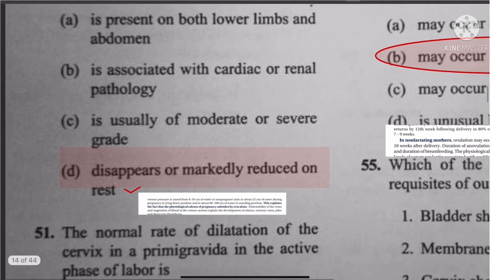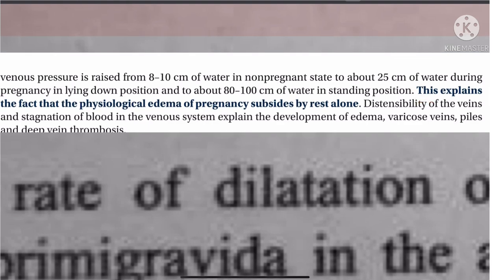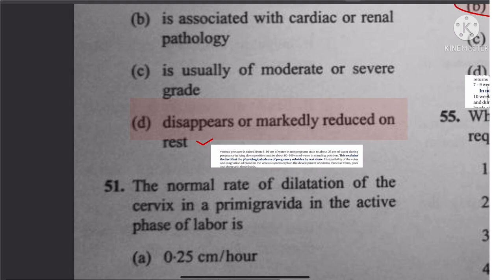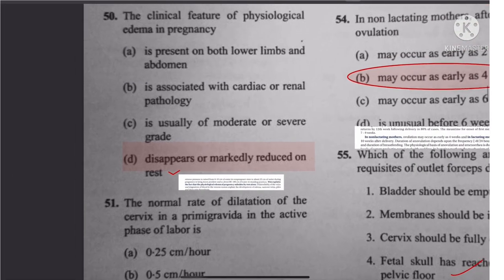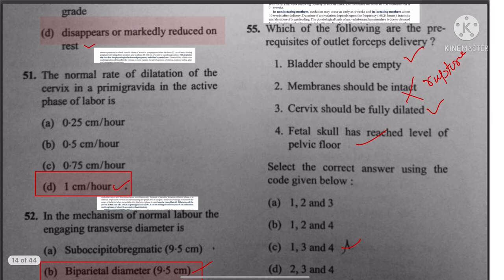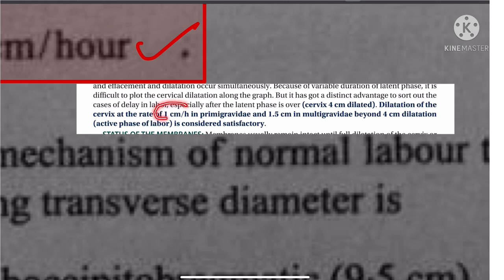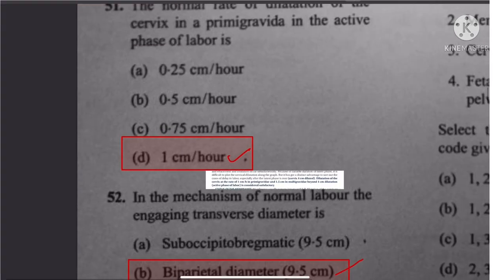Question 50: Clinical features of physiological edema in pregnancy — physiological edema subsides by rest alone and disappears or markedly reduces on rest. The answer is D. Question 51: Normal rate of dilation of cervix in the active phase of labor in a primigravida is 1 centimeter per hour, and 1.5 centimeters per hour in multigravida. The answer is 1 centimeter per hour.